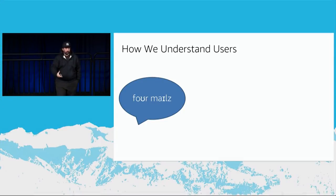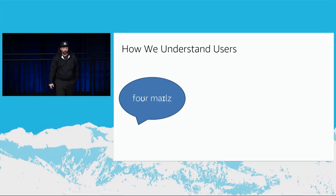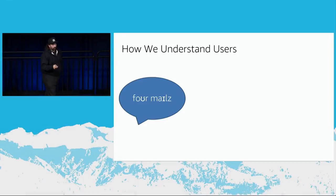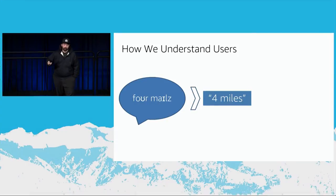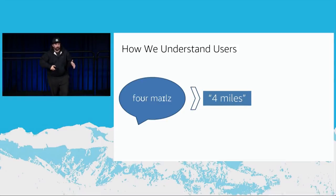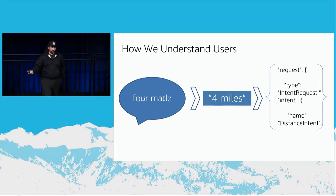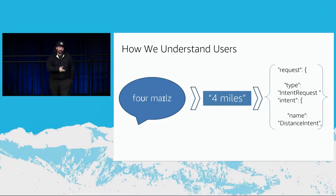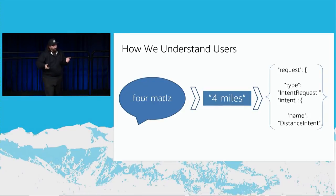Alexa has multiple microphones. When I say something — using phonetic spelling as an example — that could mean many things, like 'four miles,' and we parse that based on a grammar and language model. We turn that into everyone's favorite: JSON. So why use JavaScript to build Alexa skills? Because we turn all that language into a JSON object, and there's nothing easier to work with than JavaScript and JSON.